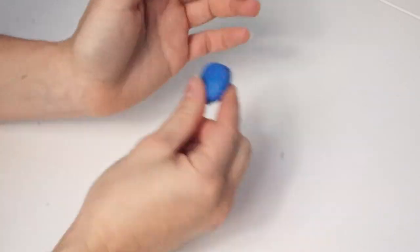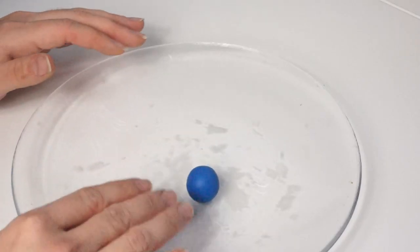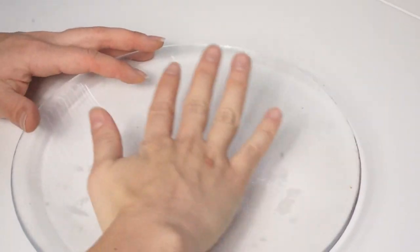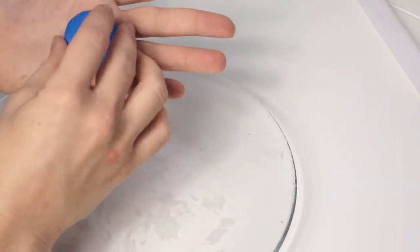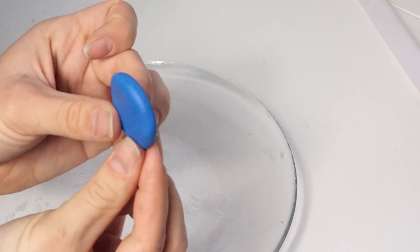First you take a piece of blue polymer clay like so. The more you take, the bigger your world and pendant will be. Roll it into a ball using your hand or flat surface. Then take a rolling pin to flatten it out, but not too much because you're going to want to leave some thickness. I'll tell you why later.